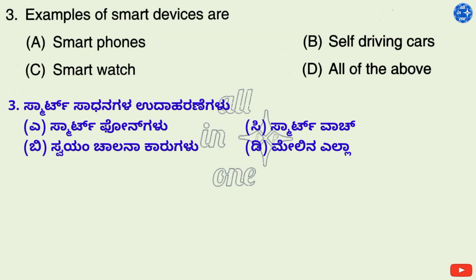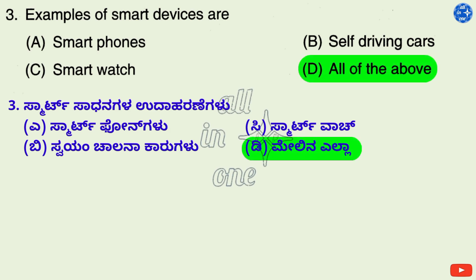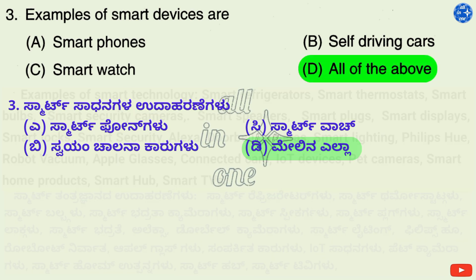Examples of smart devices: Options: A. Smart phones, B. Self-driving cars, C. Smart watch, D. All of the above. Right answer is D: All of the above.